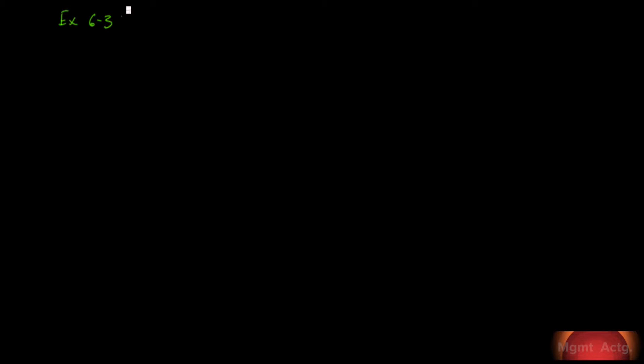Exercise 6.3 will take us through learning objective number 3. Cost per equivalent unit, weighted average method. This is the second part of a production report. Our first part we did in 6.2, the computation of equivalent units. We need to know our equivalent units first. The second part is our cost per equivalent unit.